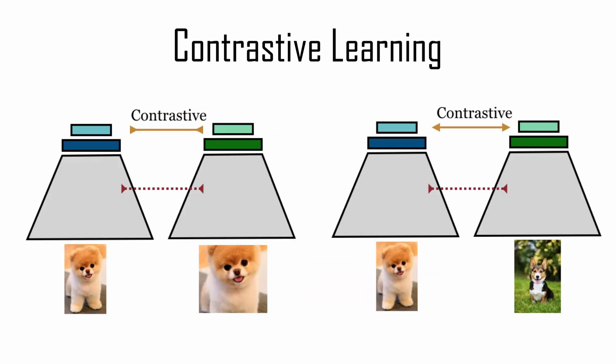Thus, you feed the encoder with the same image, but with two different augmentation techniques, and apply a contrastive loss that maximizes the agreement between the two embeddings obtained.